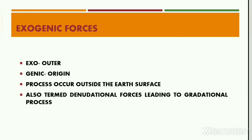Now let's move into what is an exogenic process. The processes that originate at the outer surface of the earth are termed as exogenic processes. The word exogenic has been derived from the words exo and genic, meaning outer and origin respectively. The exogenic processes are generally of three types.